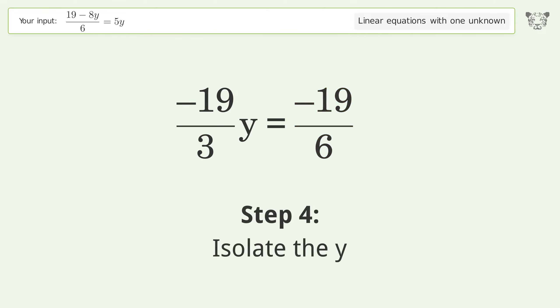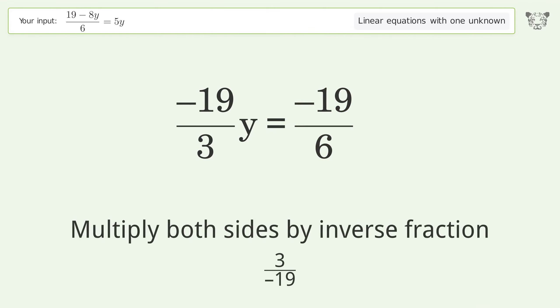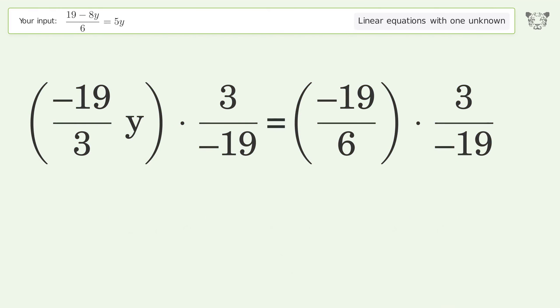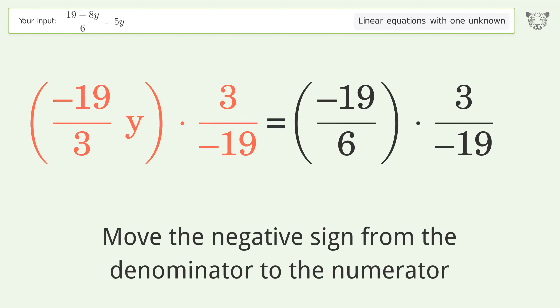Isolate the y. Multiply both sides by inverse fraction 3 over negative 19. Move the negative sign from the denominator to the numerator.